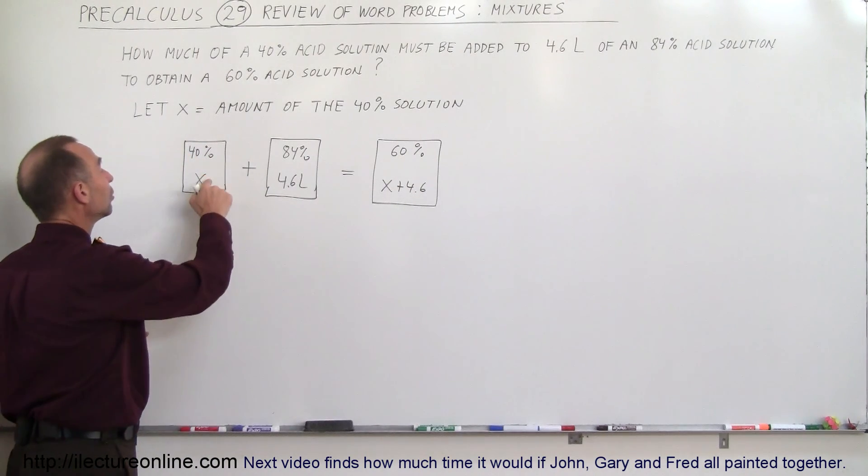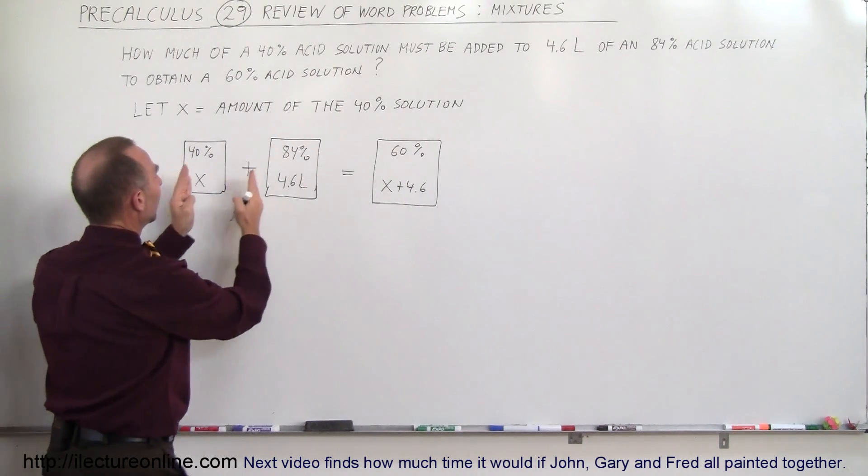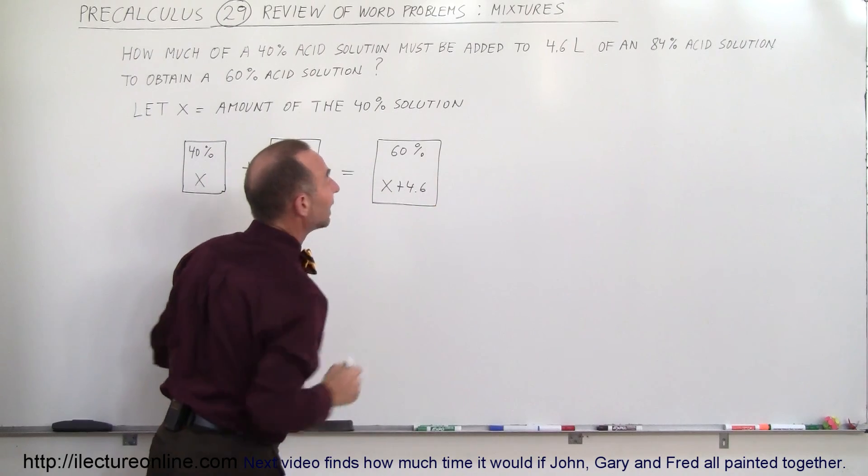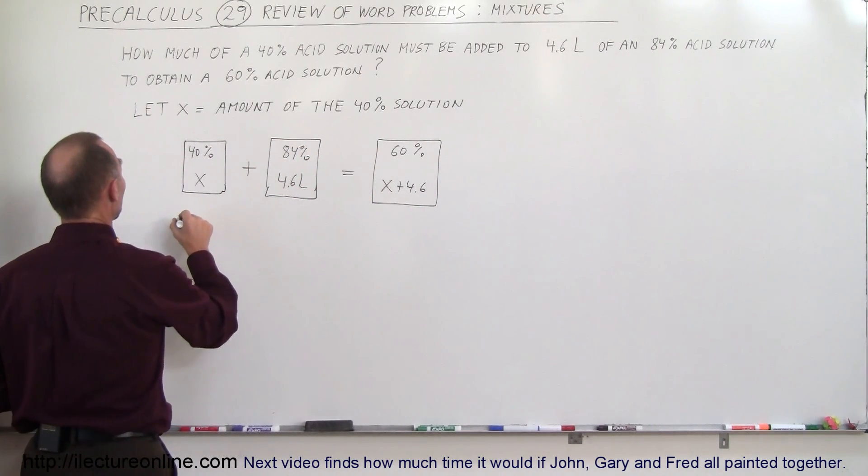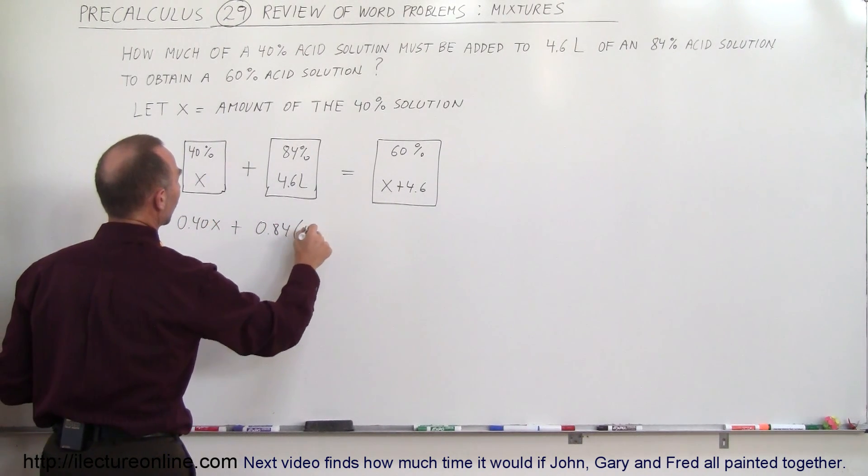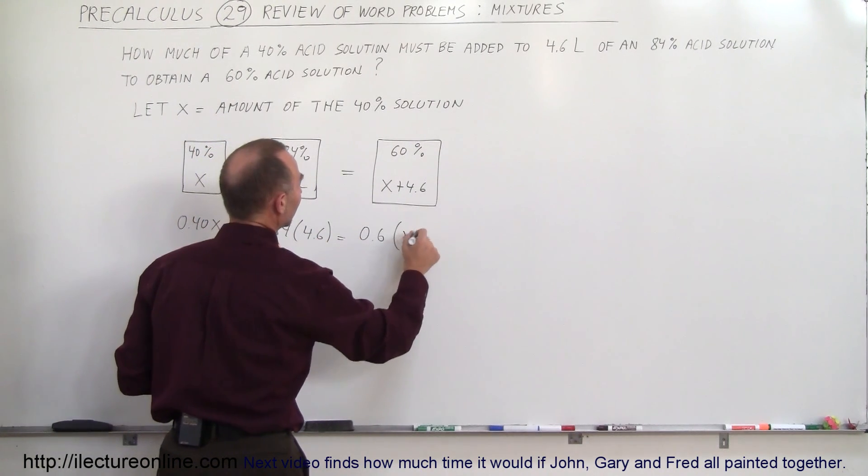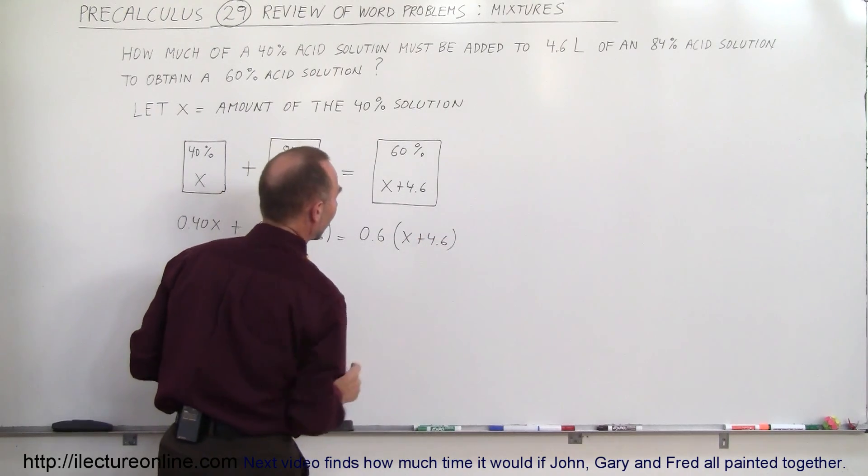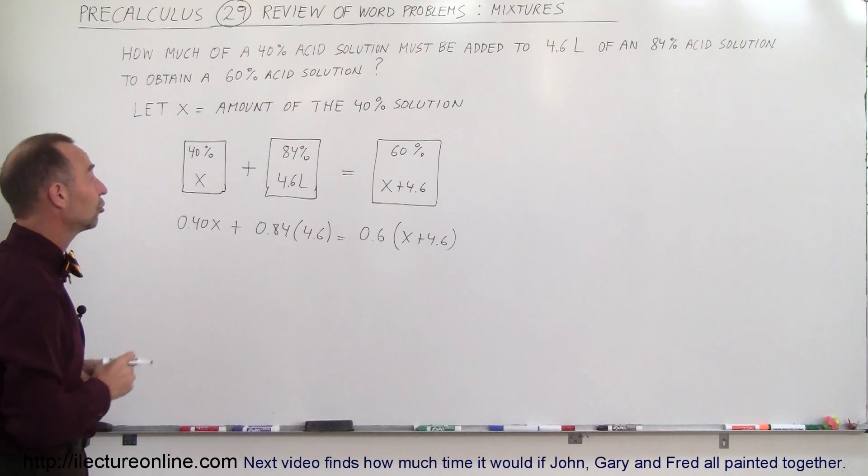Because when we take the volume and we multiply times the percentage, we get that amount of acid. So the amount of acid here plus the amount of acid here adds up to the total amount of acid in that solution and that will be our equation. Therefore we can say that 0.4X plus 0.84 times 4.6 must equal 0.6 times X plus 4.6. And that equation we can solve for X and that will tell us how much of the initial solution we need to add.